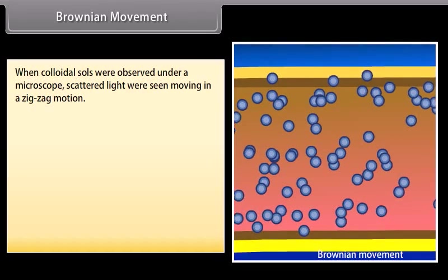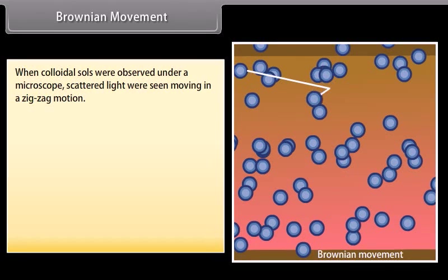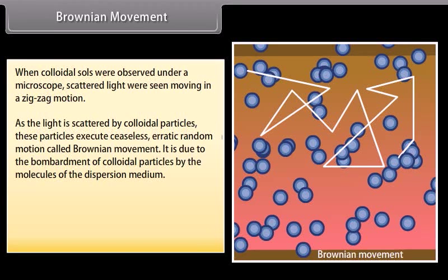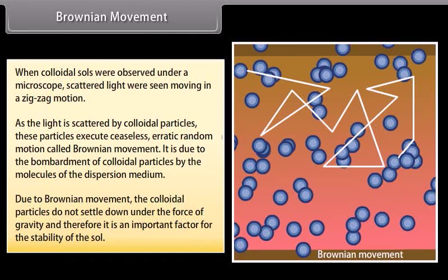Brownian movement: When colloidal particles are observed under a microscope, they are seen moving in a zigzag motion. These particles execute ceaseless, erratic, random motion called Brownian movement, caused by bombardment of colloidal particles by the molecules of the dispersion medium. Due to Brownian movement, colloidal particles do not settle down under the force of gravity, making it an important factor for the stability of the sol.